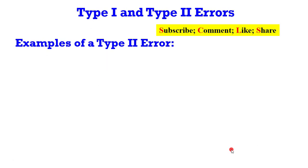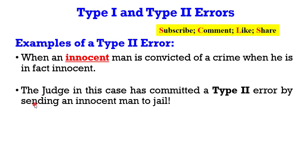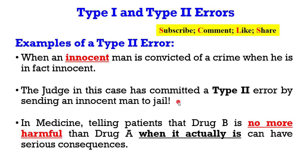How about a type 2 error? Still borrowing a leaf from the crime literature: when an innocent man is convicted of a crime when he is in fact innocent, the judge has committed a type 2 error by sending an innocent man to jail. Also, an example from medicine: when you tell patients that drug B is no more harmful than drug A when it is actually harmful, then such will have serious consequences and a type 2 error has been committed.